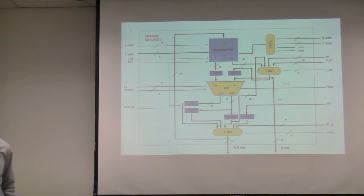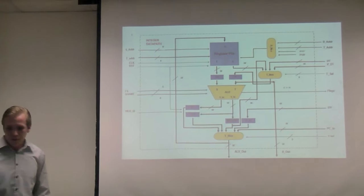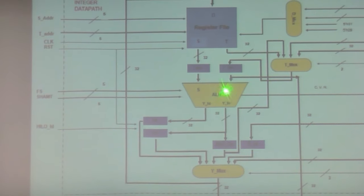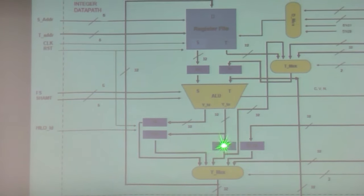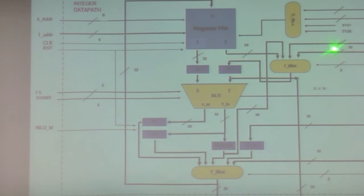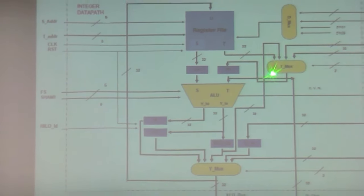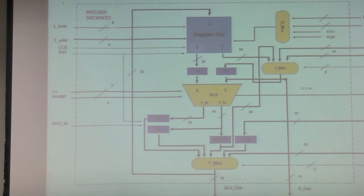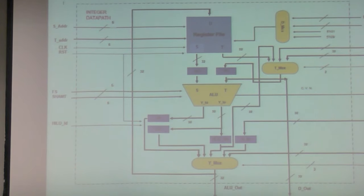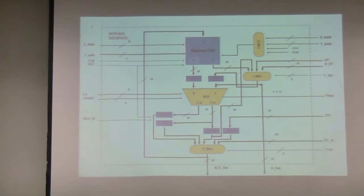This is our integer data path. We have our 32-bit register file with RS and RT. Regarding the second address calculation: the ALU result goes into ALU out, then there's a path back to the Tmux. It will be loaded as the second effective address calculation and then loaded into the MAR once again. That's how it performs the double load/store without changing the intermediate contents.